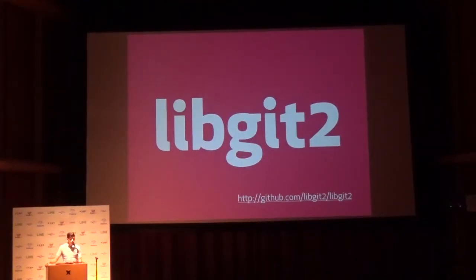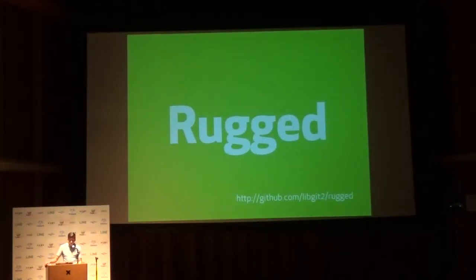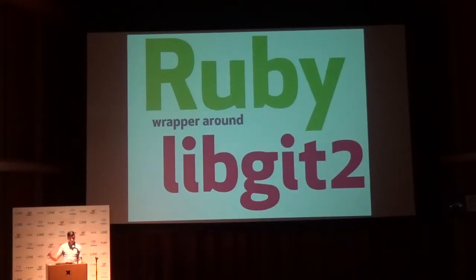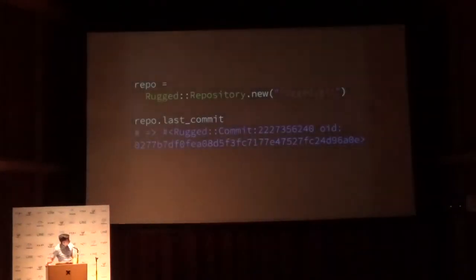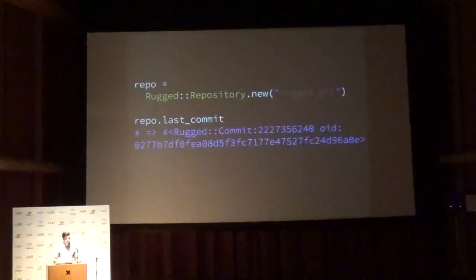Now we have this library we can link against so we don't have to shell out anymore like we did with Grit. The Ruby wrapper around libgit2 is called Rugged — it's just a C extension that makes all the calls to libgit2. So Grit was a Ruby wrapper around Git itself; now we have libgit2 and Rugged as the new version. The code looks basically the same, the APIs are a little different, but you can access pretty much everything the same way — commit history, walking trees, looking up individual files by path.